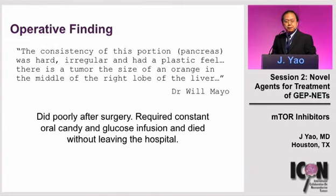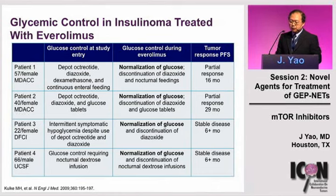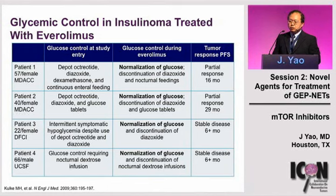Until recently, we didn't do much better than this. Patients with refractory hypoglycemia are among the hardest to manage, often in the hospital and ICU for months at a time. In our earlier study with everolimus, we treated four patients — two at MD Anderson, one at the Dana-Farber, and one at UCSF. Among these patients with refractory hypoglycemia, all four patients quickly normalized their blood sugar and were able to discontinue other measures for glucose control. Two patients also experienced tumor shrinkage.